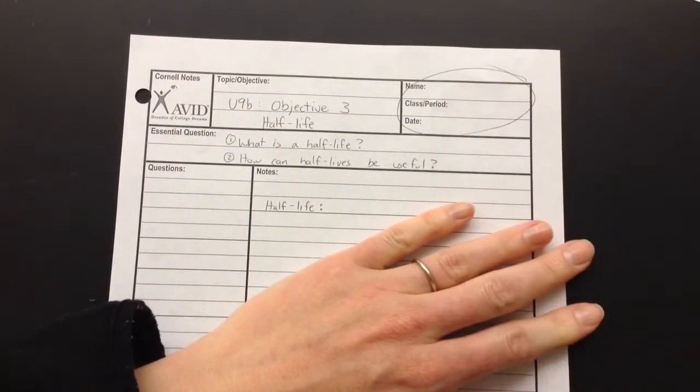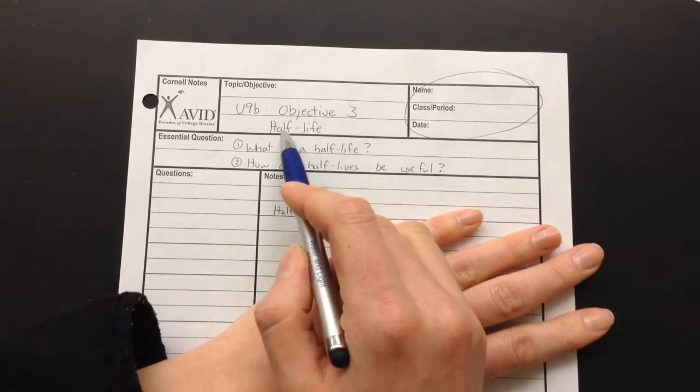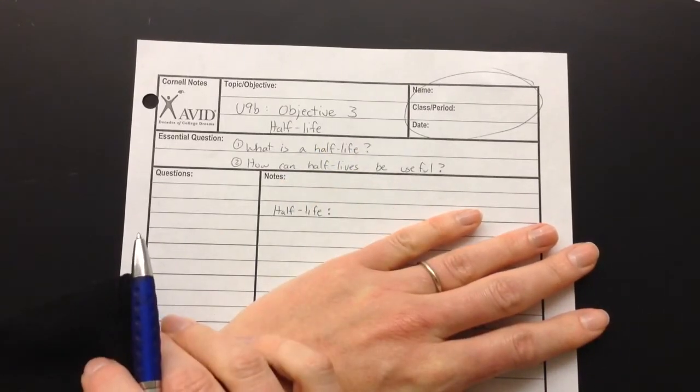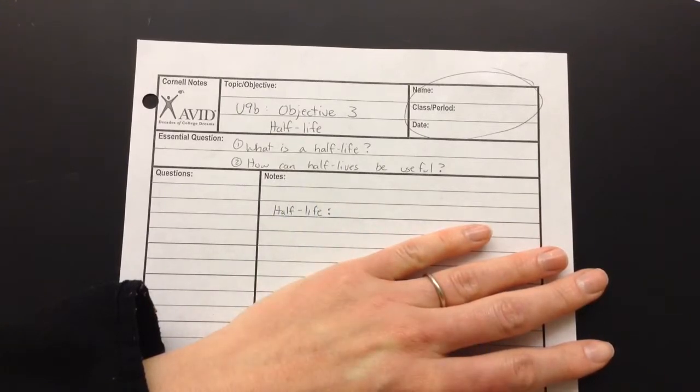Remember your name, class, period, and date go up here. We're going to be talking about Objective 3, the half-life of radioactive material. And we're going to answer the questions, what is a half-life and how can half-lives be useful?